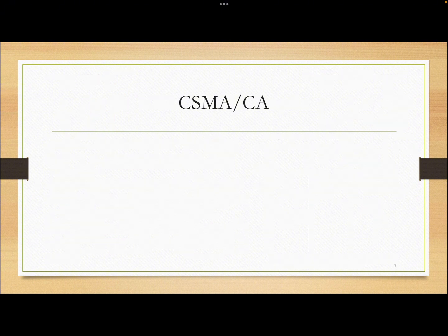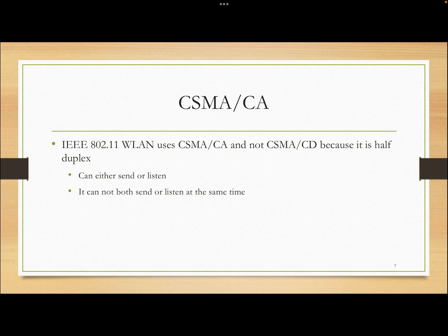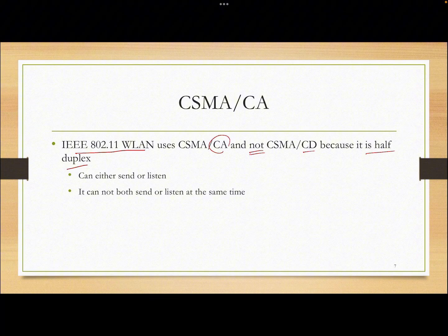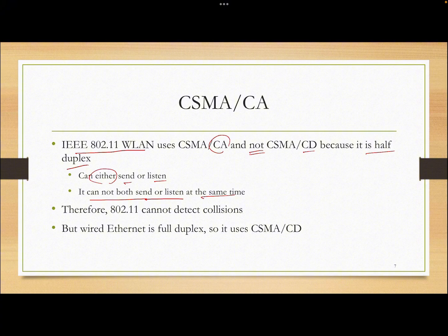Now let's emphasize CSMA/CA. I told you that CSMA/CD is more efficient, so why do we use CSMA/CA in wireless LAN? The 802.11 wireless LAN uses CSMA/CA — not CD — because wireless is half-duplex. When you send wirelessly, you cannot listen at the same time; you can either send or listen, but not both simultaneously. This is the main reason you cannot detect collision while sending.